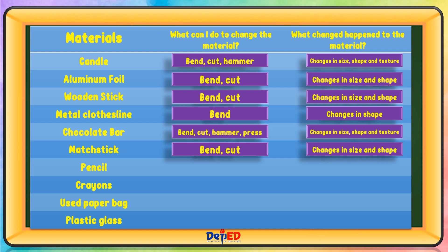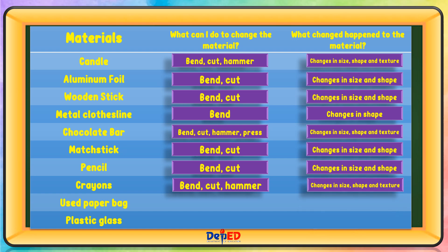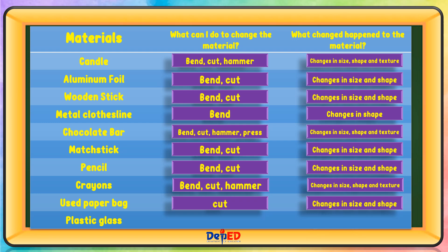Pencil — what can I do to change the material? Bend and cut. What change happened to the material? Changes in size and shape. Crayons — what can I do to change the material? Bend, cut, and hammer. What change happened to the material? Changes in size, shape, and texture. Used paper bag — what can I do to change the material? Cut. What change happened? Change in size and shape. Plastic glass — what can I do to change the material? Bend, cut, and press. What change happened? Changes in size and shape.